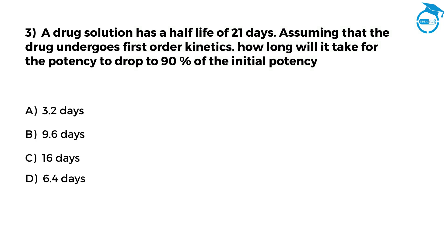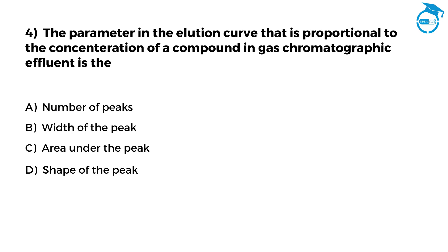Let us see the correct answer. The right option is A, that is 3.2 days. I hope you are ready to take the next question. The parameter in the elution curve that is proportional to the concentration of a compound in gas chromatographic effluent is: